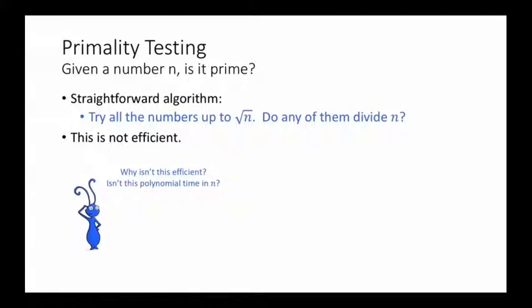This is the problem of primality testing. Given a number n, is it prime? There's a straightforward algorithm for primality testing. Just try all of the numbers up to √n. Check if they divide n. If any of them do, then n is not prime. Otherwise, if you can't find any divisors of n, then n is prime. This algorithm works, but it's not efficient.